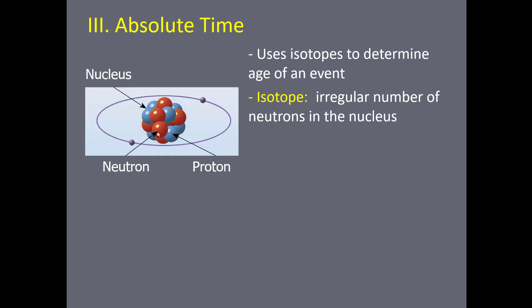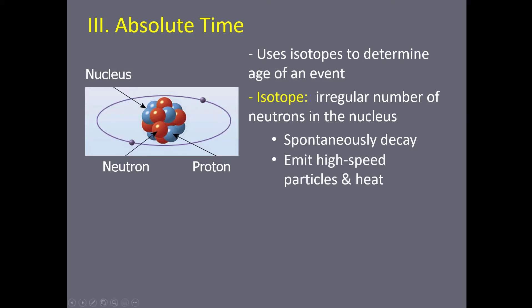What can happen with these isotopes is that they can spontaneously decay. One of the reasons they spontaneously decay is that the additional neutron makes it hard for the nucleus to hold itself together, so it will spontaneously emit a high-speed particle and a tremendous amount of heat during the process of radioactive decay. There are a variety of ways that the decay can occur — your textbook talks about three different ones.